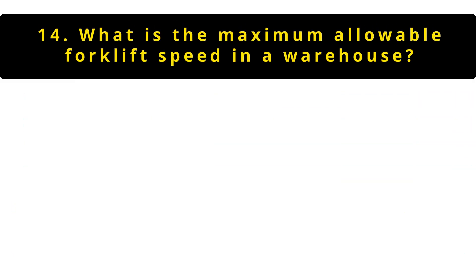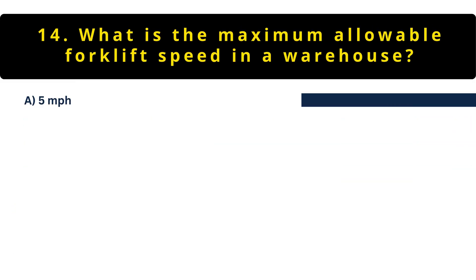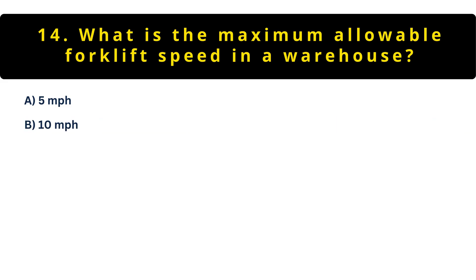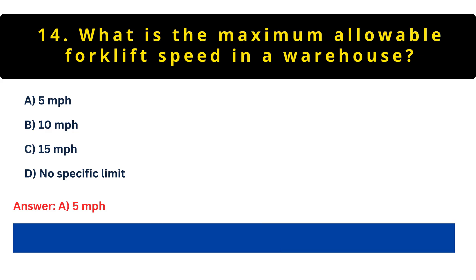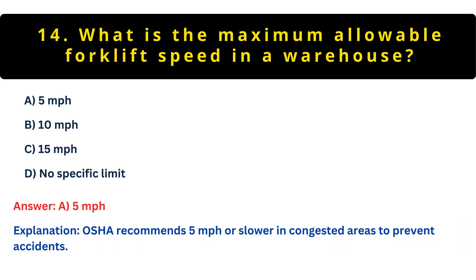Question 14: What's the maximum forklift speed in a warehouse? Option A: 5 mph. Option B: 10 mph. Option C: 15 mph. Option D: No limit. OSHA recommends A — 5 mph in congested areas. Faster speeds increase tip-overs and collision risks. Slow down near pedestrians.